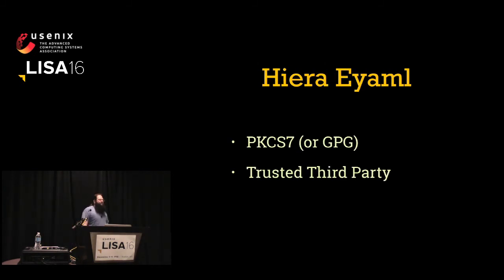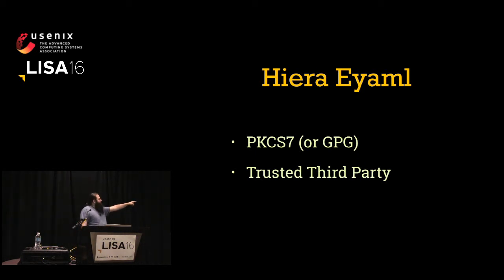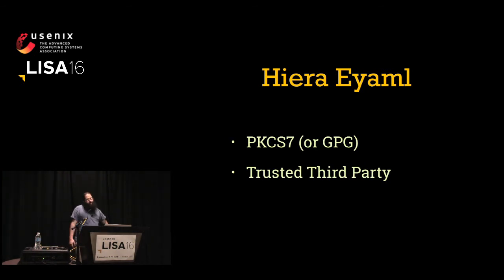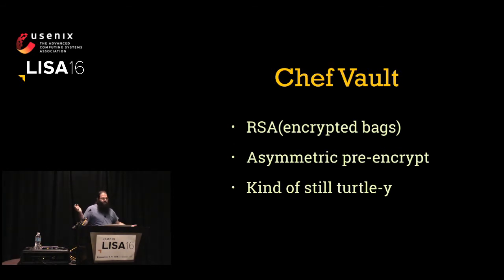Ansible Vault is a similar tool to encrypted data bags, but it takes advantage of Ansible's push-based nature so the decryption key is only needed on the workstation running Ansible. But again, it's a symmetric system — where did the password come from? Did you copy it out of a wiki? Also, we don't really have audit logging. EML in Puppet does all decryption on the Puppet master, so it's a trusted third-party system. It uses either PKCS7 or GPG, so it can be symmetric or asymmetric.